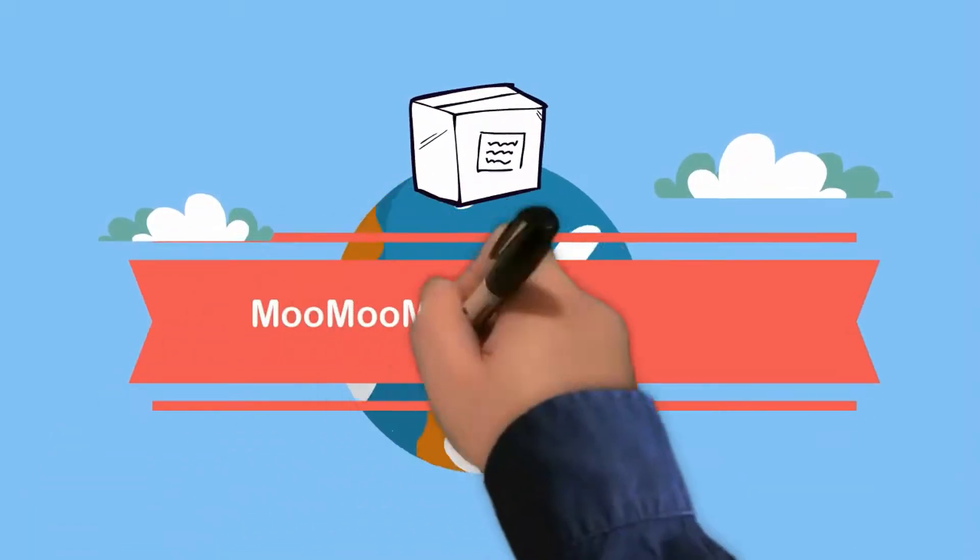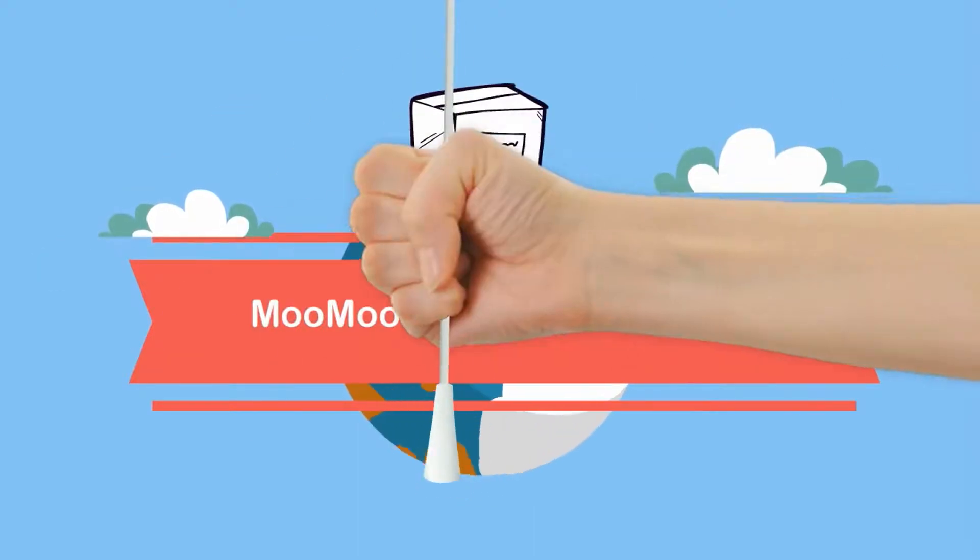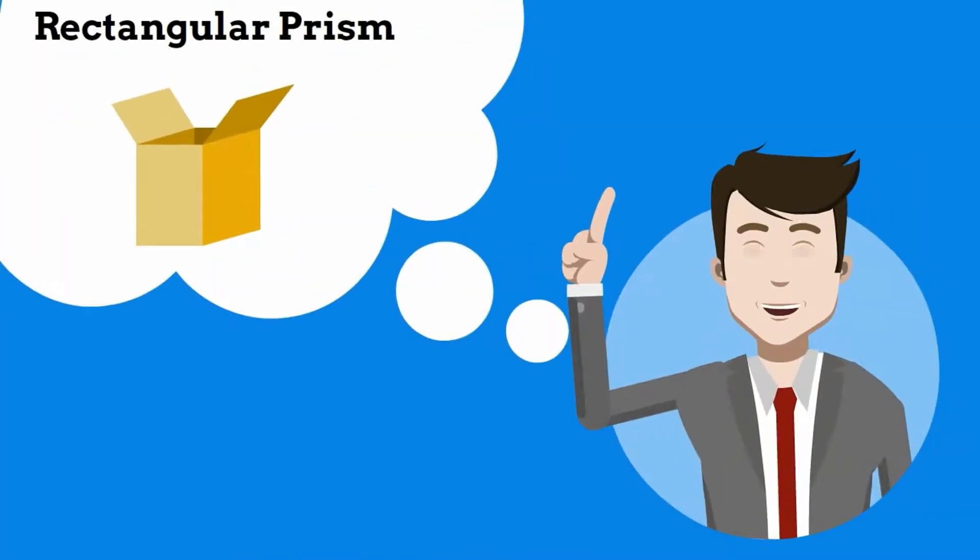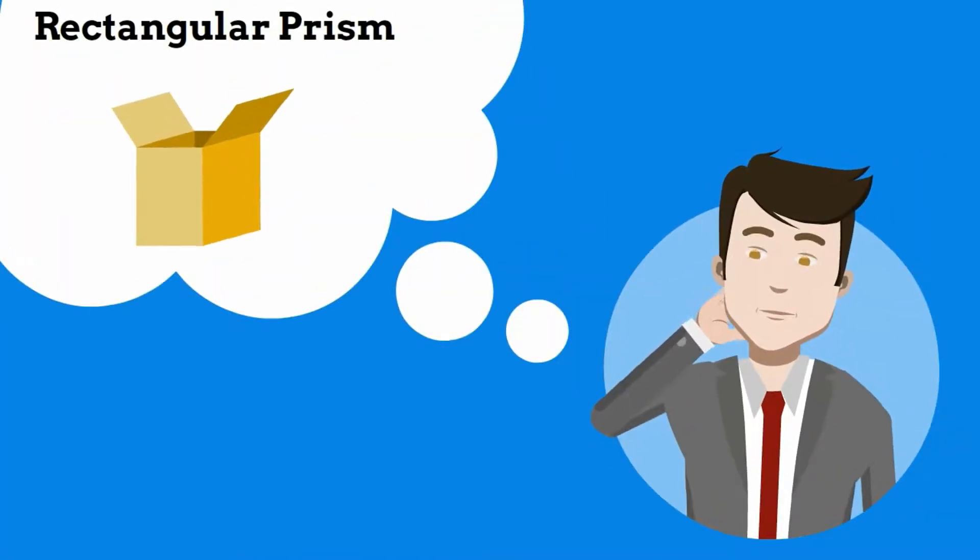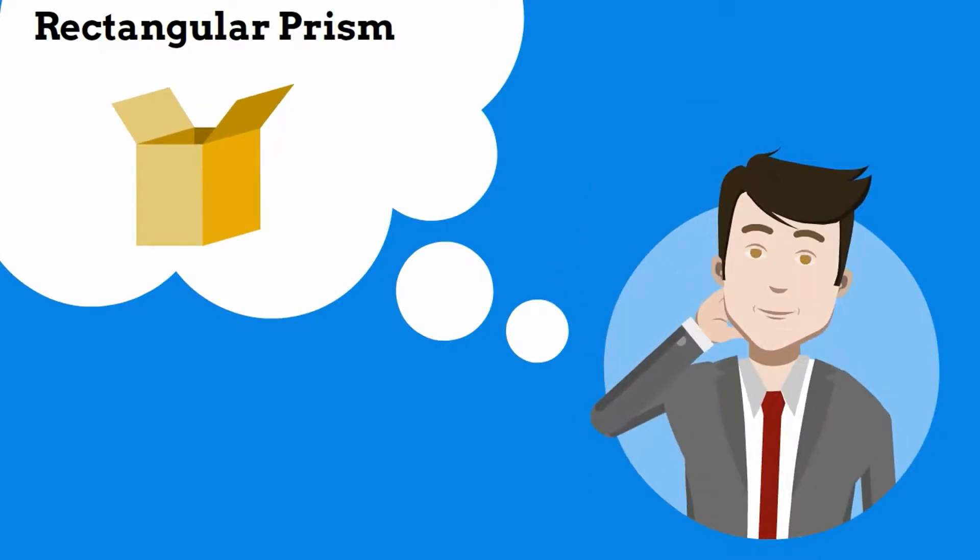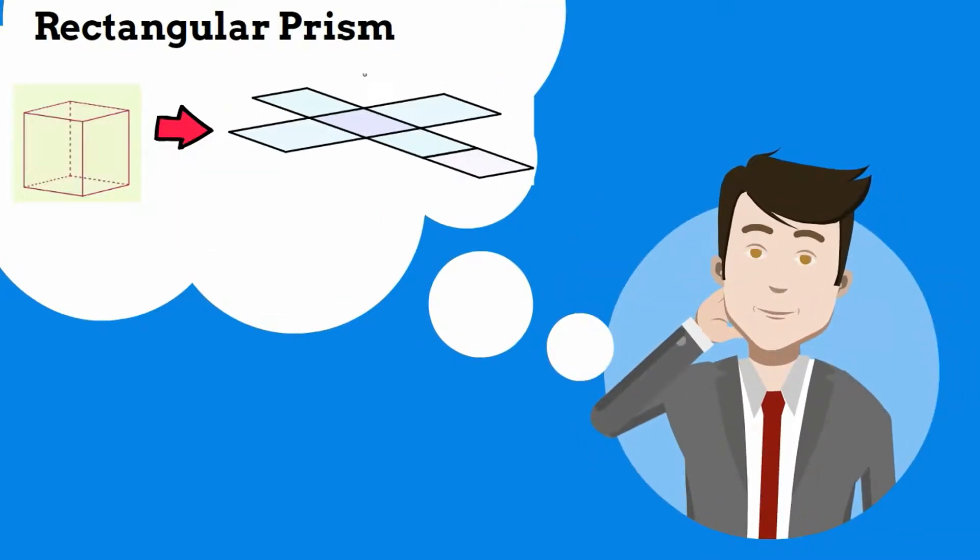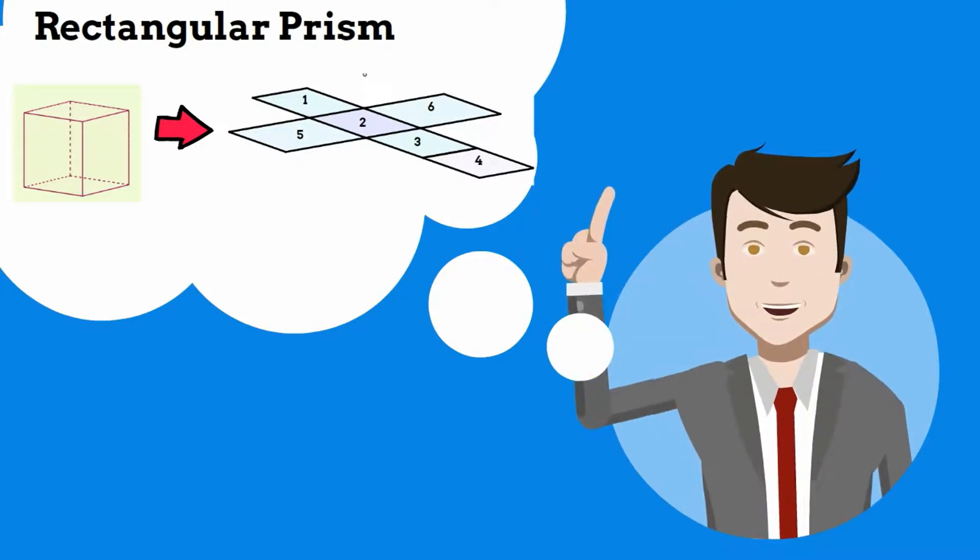Welcome to MooMooMath and Science. In today's video I'd like to talk about finding the volume of a rectangular prism. A rectangular prism is a solid three-dimensional object that has six faces that are rectangles. If you unfold a rectangular prism, it will look like this. Notice the six rectangles.